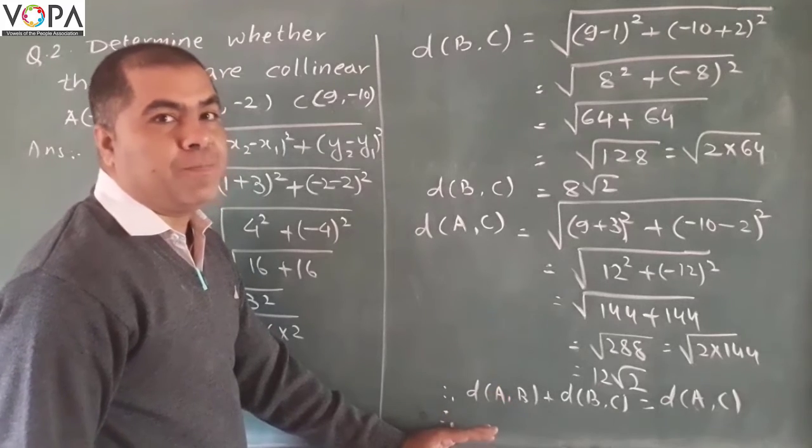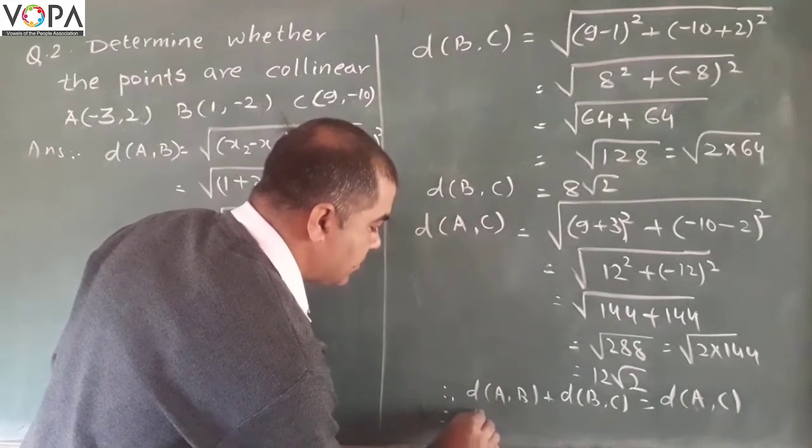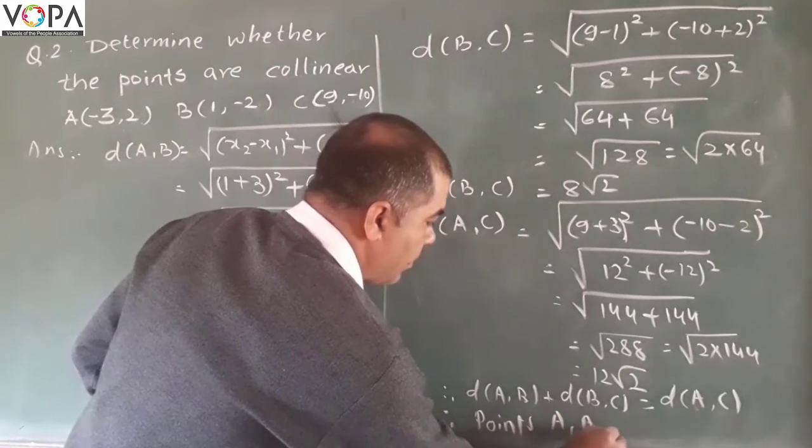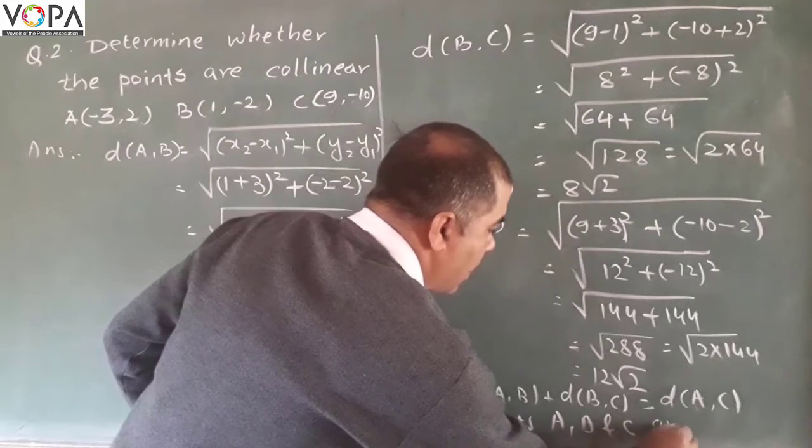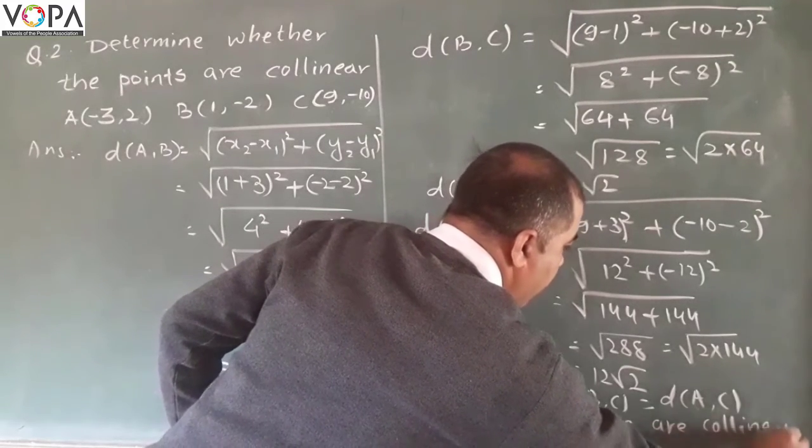Therefore, points A, B, and C are collinear.